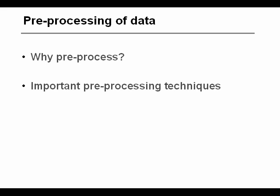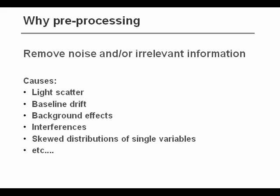First preprocessing. We will discuss why we want to do preprocessing, and we will illustrate some of the more important preprocessing techniques. The basic rationale behind preprocessing is to remove variation in the data which is not relevant for the problem that you're looking at. Some simple examples could be light scattering effects, baseline drifts, background effects, interferences, skewed distributions, and a lot of other items that could be relevant to handle in some sort.